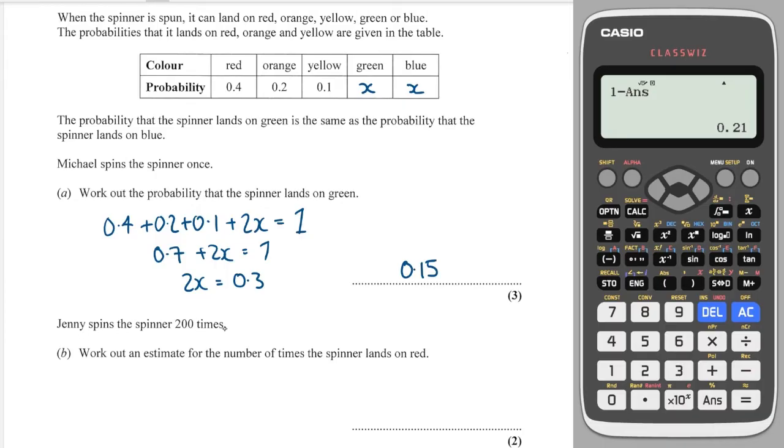Jenny spins the spinner 200 times. Work out an estimate for the number of times it lands on red. Well, red probability is 0.4. So that means that about 40% of the time it will land on red. So in order to work out how much we would estimate, we take the number of trials and we multiply it by the probability. And this gives me 80.